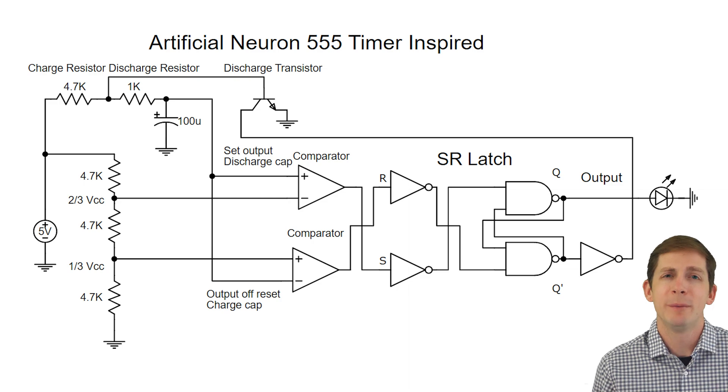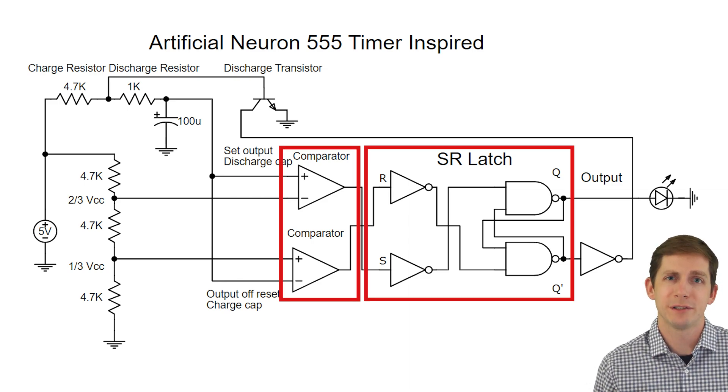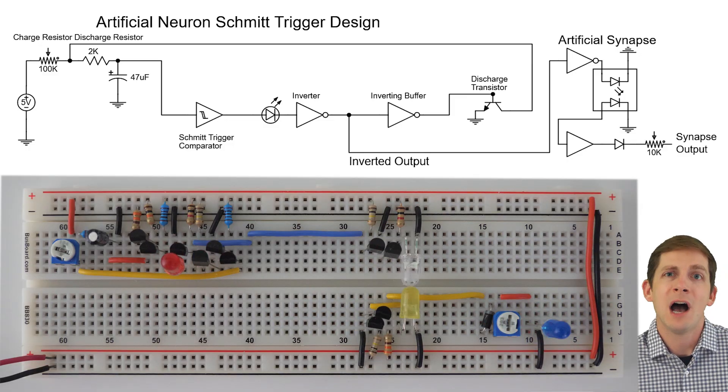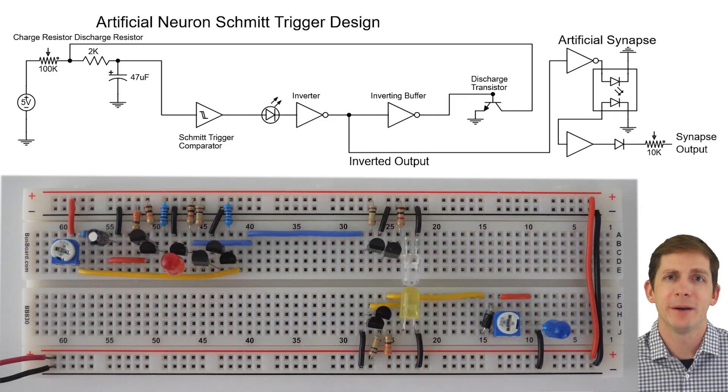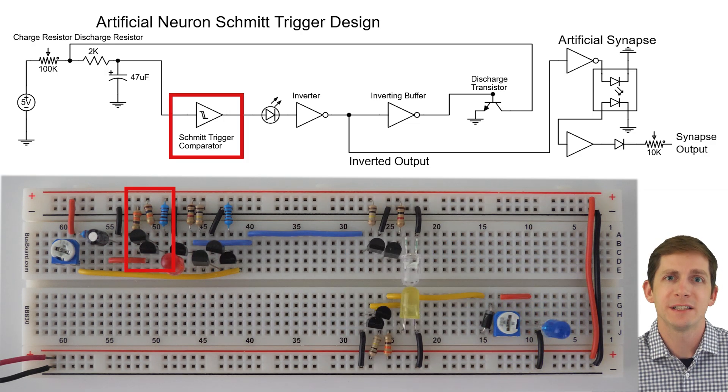This circuit would work, but building two comparators and an SR latch would end up using lots of transistors. Since the neural network will be using lots of artificial neurons, reducing the number of components is important, so I really wanted to try and build a simpler design. I was able to build a simpler circuit by using a single Schmitt trigger comparator where the SR latch is not even needed.